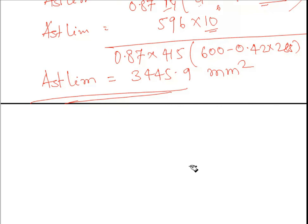So this was the problem where we calculated three conditions for the singly reinforced beam — moment of resistance for each case and Ast limiting. We have now concluded this problem and finished the design of singly reinforced beam across approximately five lectures. From the next lecture, we will cover the design of doubly reinforced beam. If you have any doubts or design problems, write in the comment section. Thank you, have a nice day, take care, bye bye.